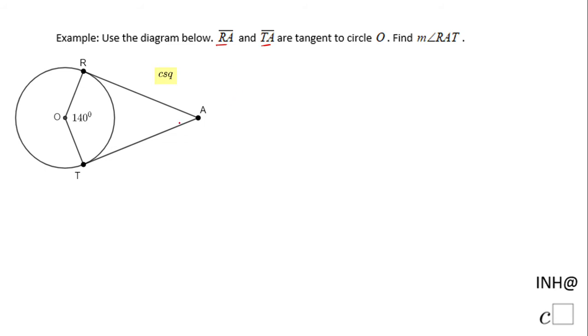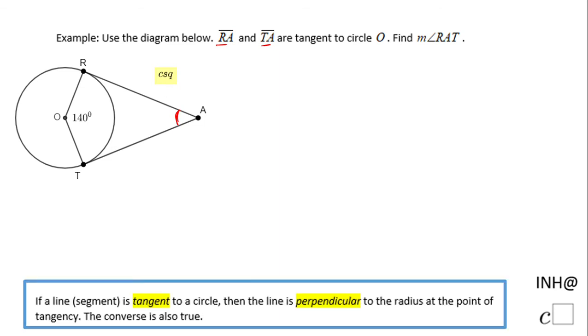We have a property of a tangent: a tangent is perpendicular to the radius at the point of tangency. In other words, these angles here are 90 degrees because O R is perpendicular on R A. That's what the theorem says.